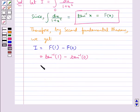Now tan inverse 1 is equal to pi by 4 minus tan inverse 0 that is 0. So we get I equal to pi by 4.